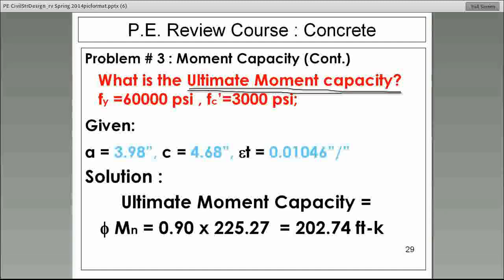All right? Now, the ultimate moment capacity is the amount of moment that the designer would allow the structure or the element to be exposed to. What we covered before, what we call nominal moment, nominal moment is also called theoretical ultimate moment.